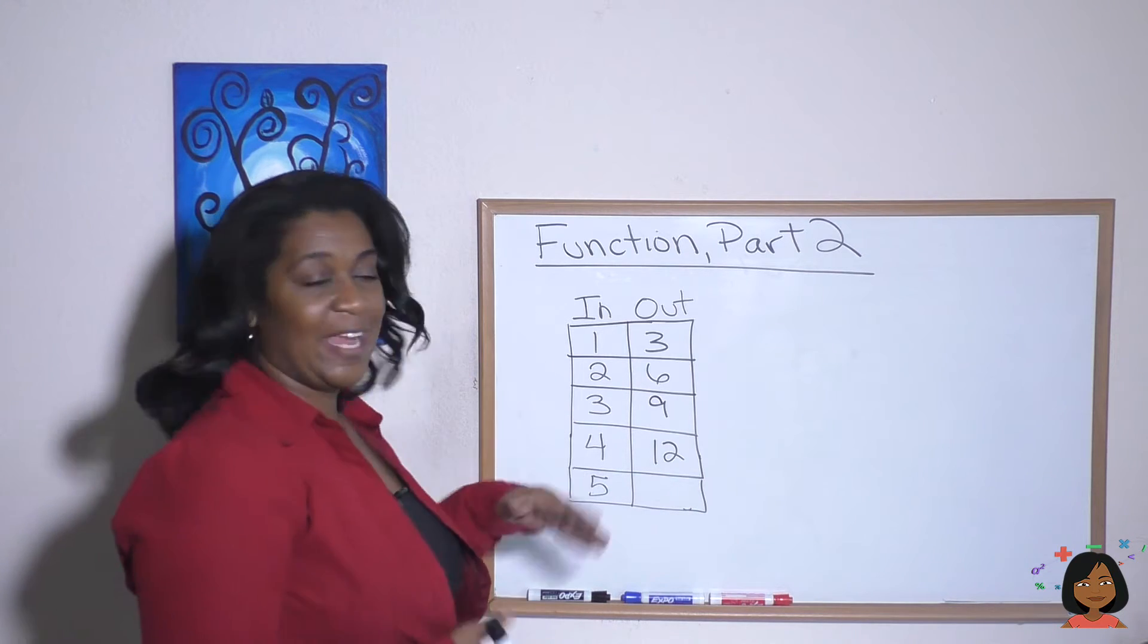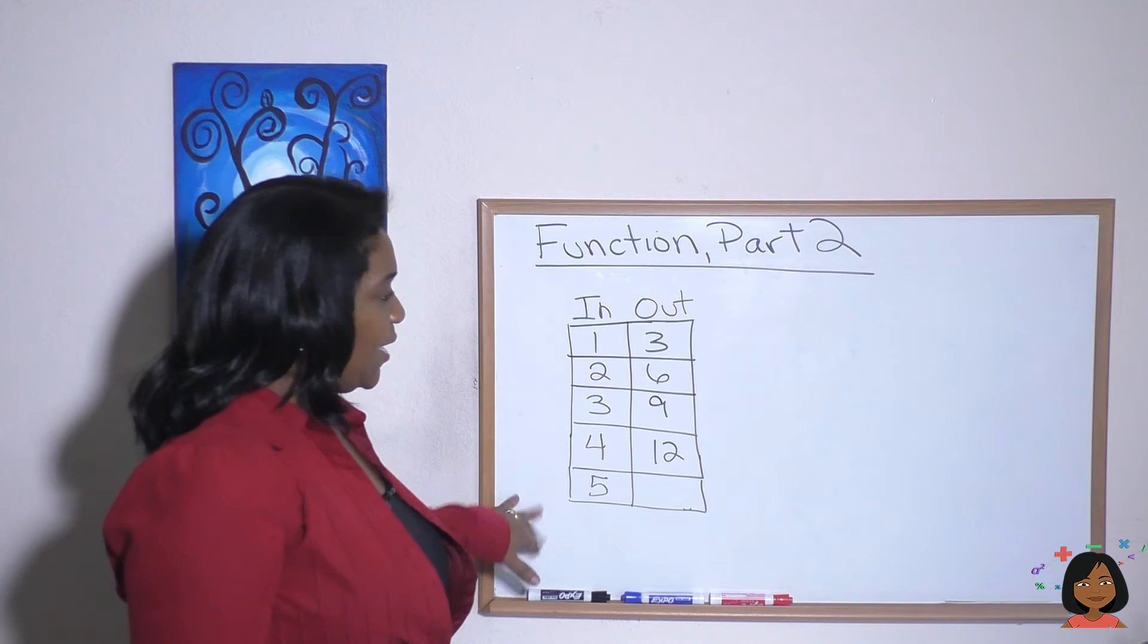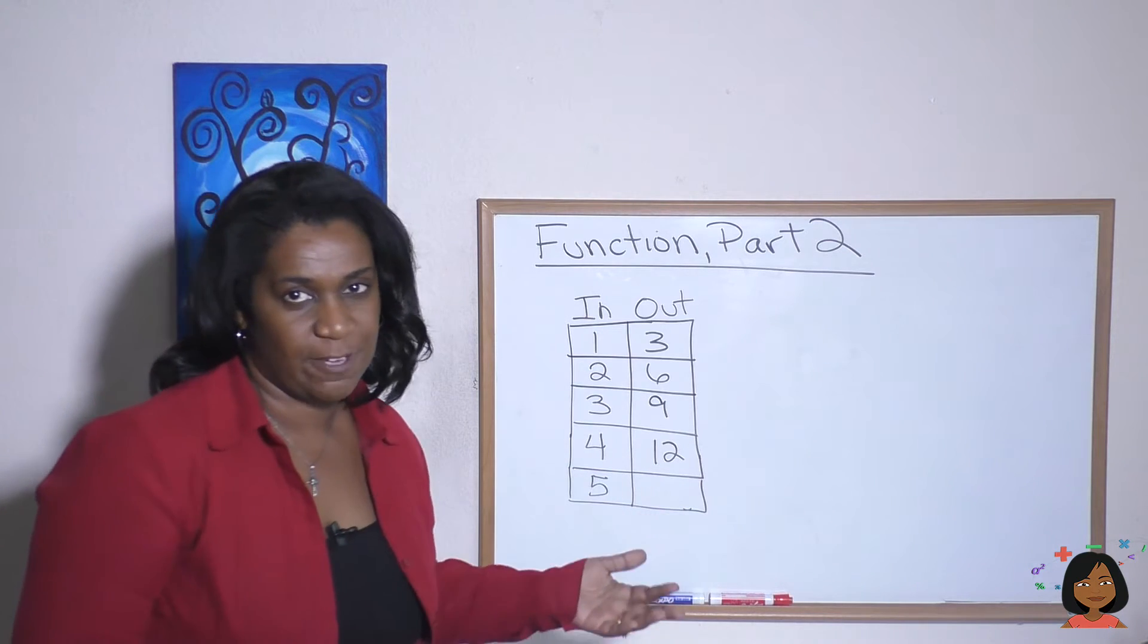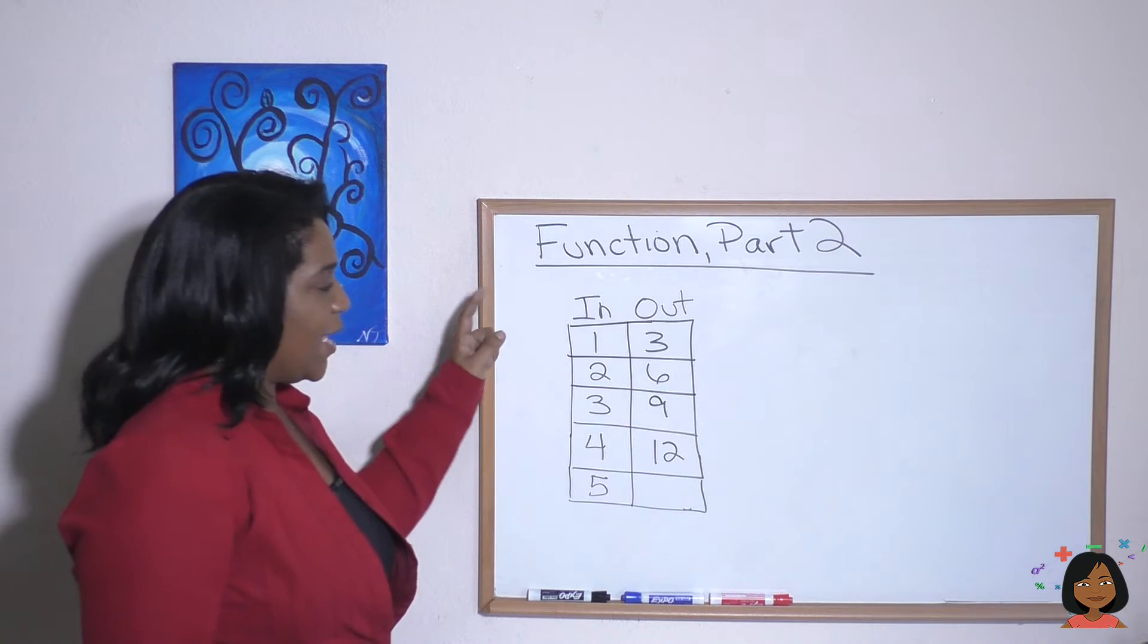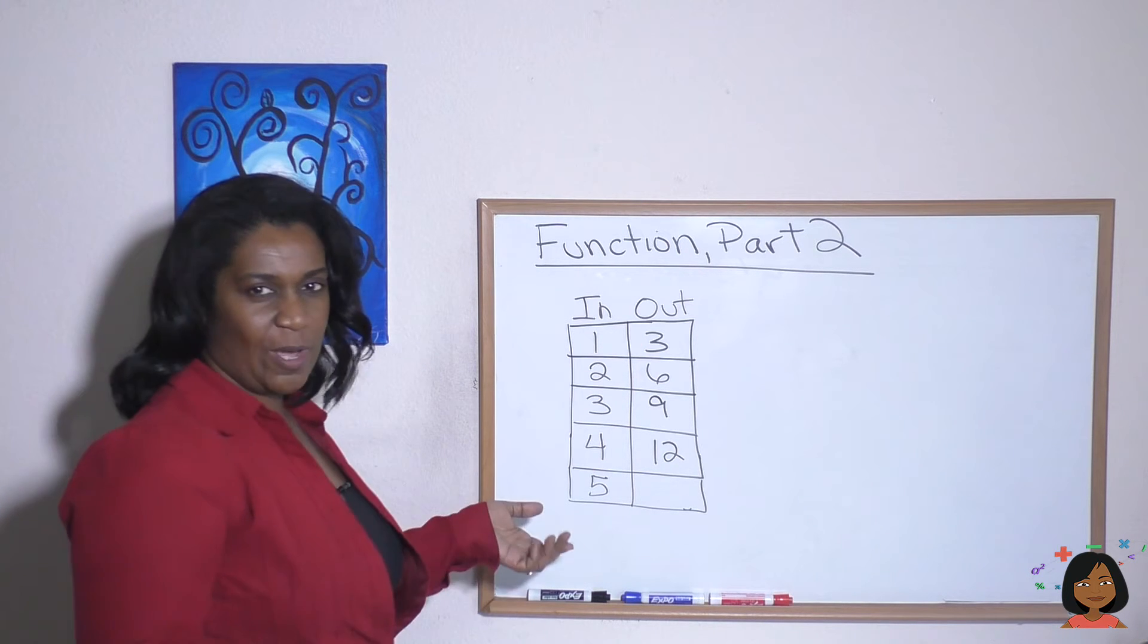Okay, so here I have one. I've got my in column, and I've got my out column. Let's see if we can figure out the relationship. So if I put in one and I end up with three, what happened?